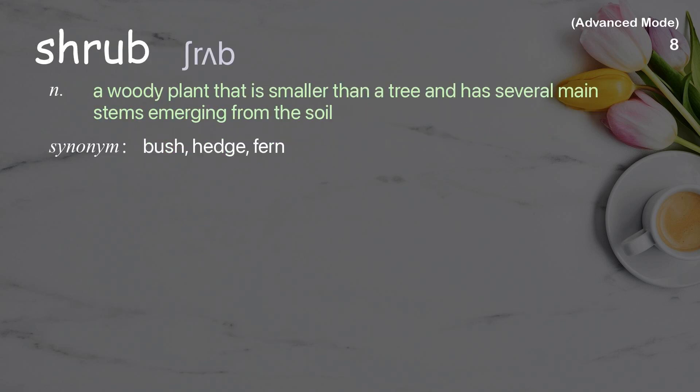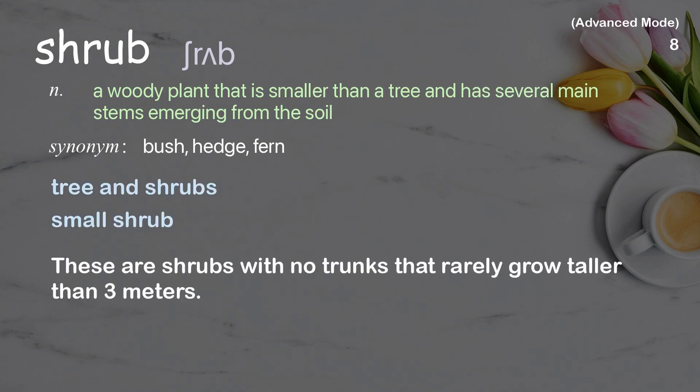Shrub: A woody plant that is smaller than a tree and has several main stems emerging from the soil. Examples: Trees and shrubs. Small shrub. These are shrubs with no trunks that rarely grow taller than 3 meters.